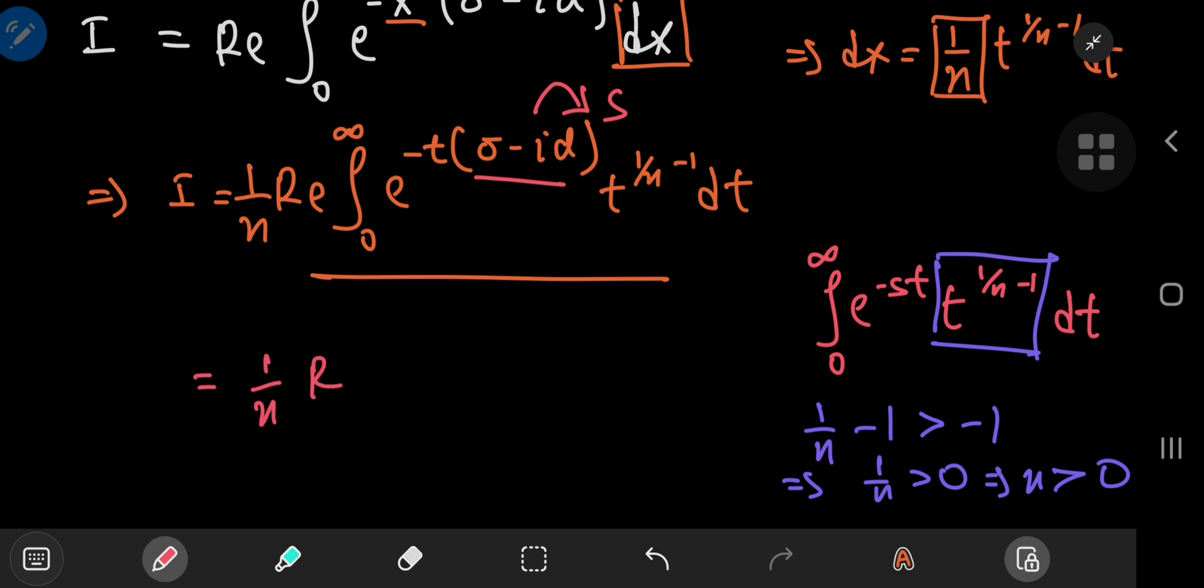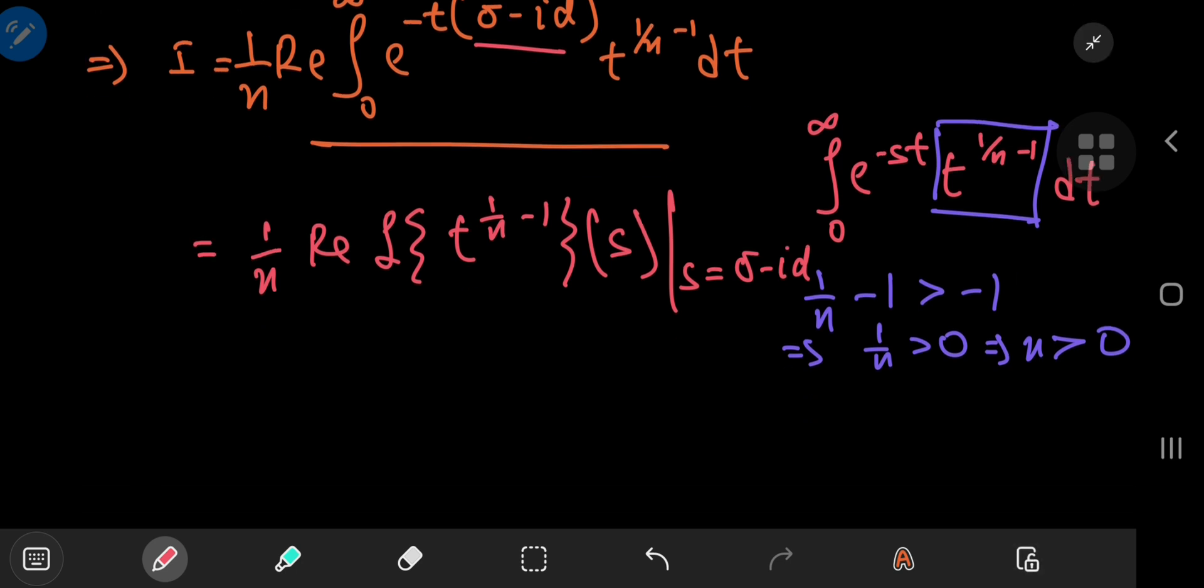With this restriction on the n variable holding, we have 1 by n times the real part of the Laplace transform of t to the 1 by n minus 1, which is a function of the complex variable s. And we're interested in the case where s equals sigma minus i times alpha.